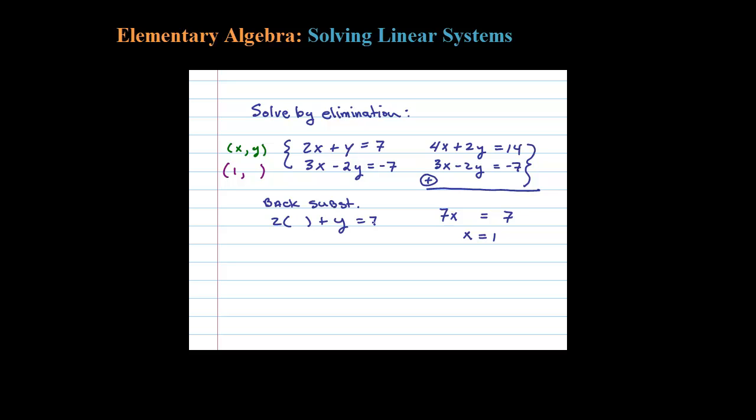We know already X is 1. Substituting that in, we'll get 2 plus Y equals 7, and then subtracting 2 we're left with Y equals 5. So the solution is going to be 1 comma 5.